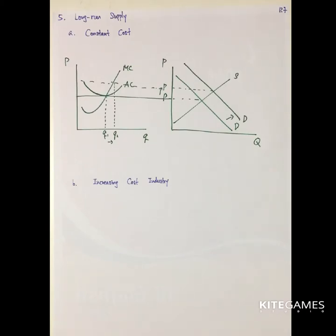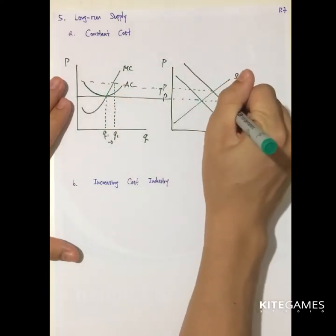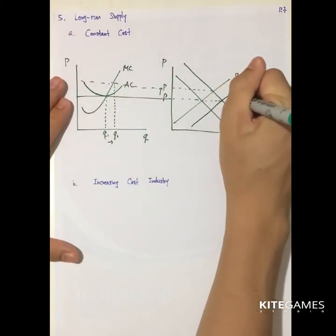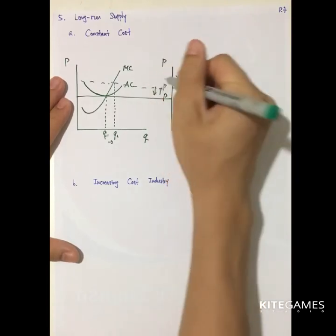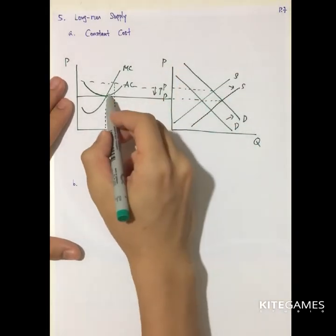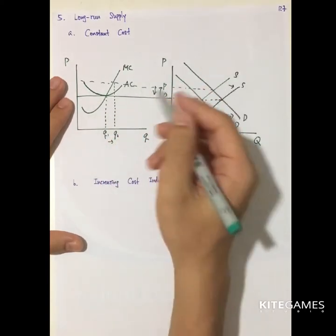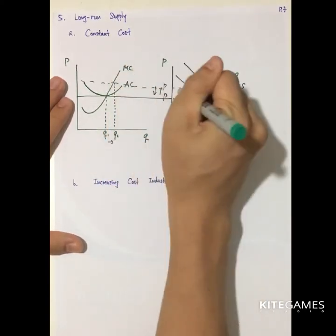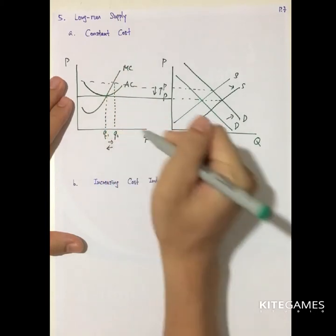As a result, the supply will shift to the right. If this is the constant cost case, that means the newcomers share the same cost functions. As a result, the price will eventually go back to the original price, because the newcomers have the same average cost, and the output will eventually go back to Q1.